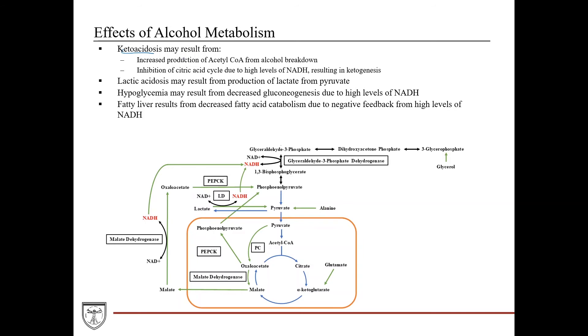Another result of having decreased gluconeogenesis and hypoglycemia is a person can develop ketoacidosis. And again, this can be a result of the increased production of acetyl-CoA, which is used to make ketone bodies. It also occurs from the high levels of NADH that can inhibit the citric acid cycle, which would then also lead to ketogenesis.